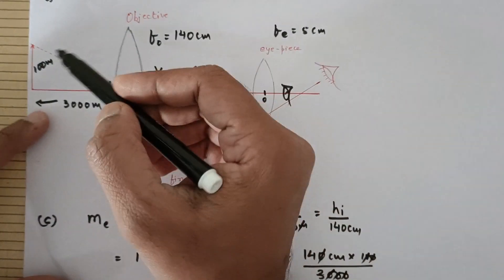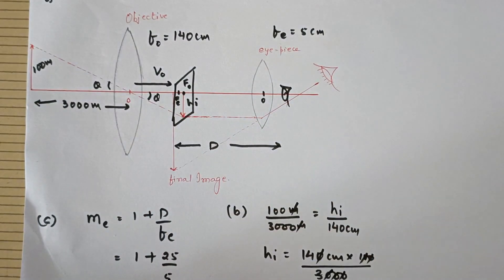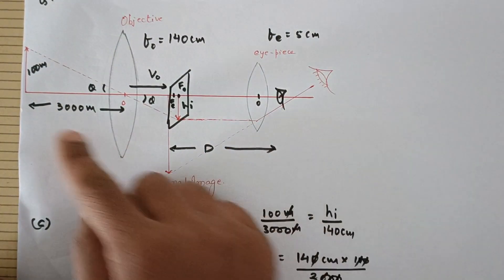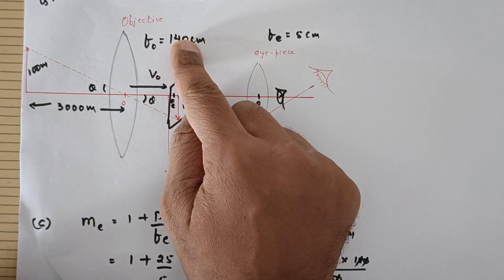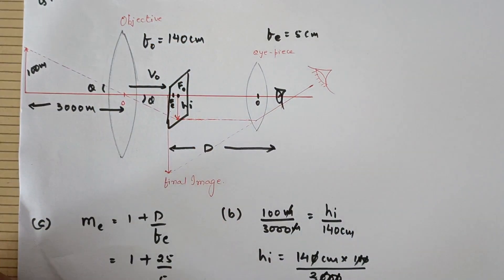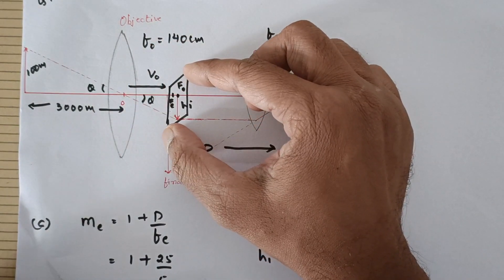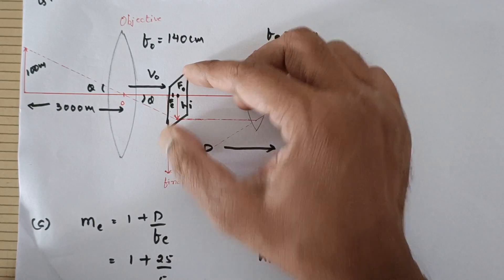Please understand that the object is not practically at infinity but very very far away because this distance is very large compared to this. So when the object is very very far away, the image is formed at the focal plane.